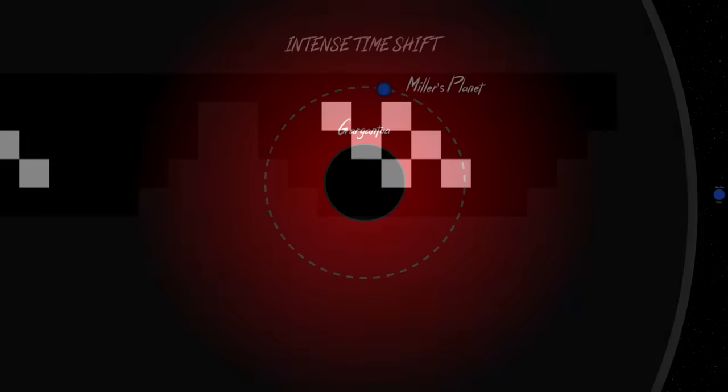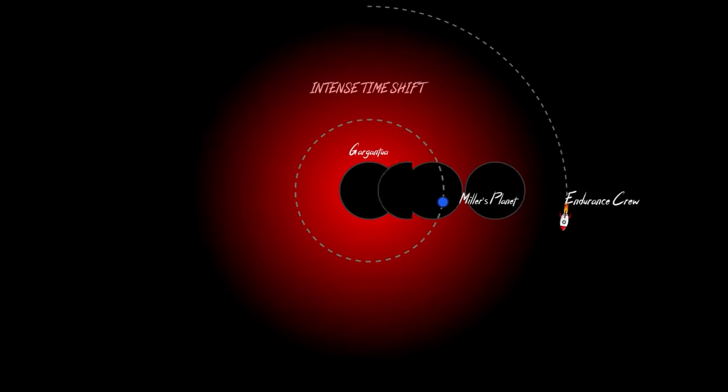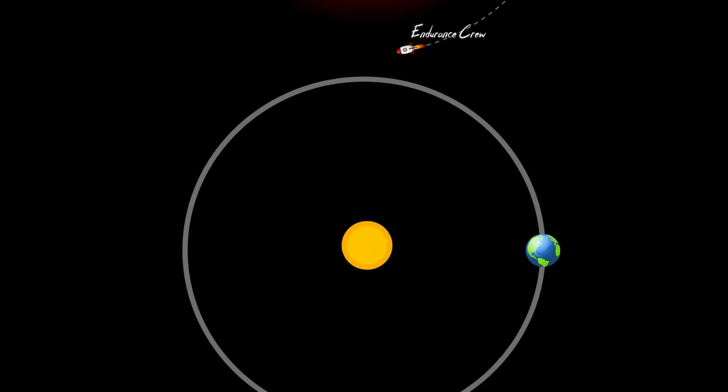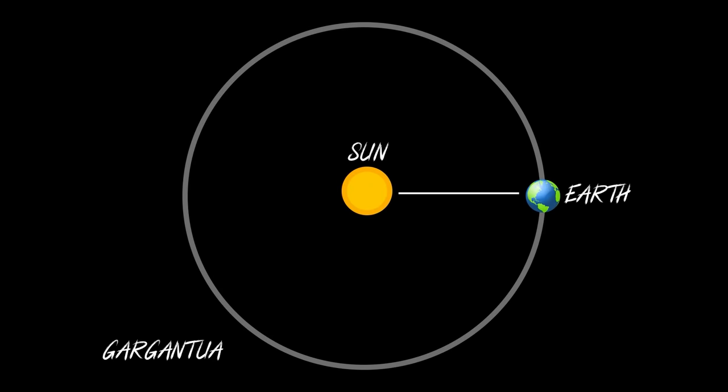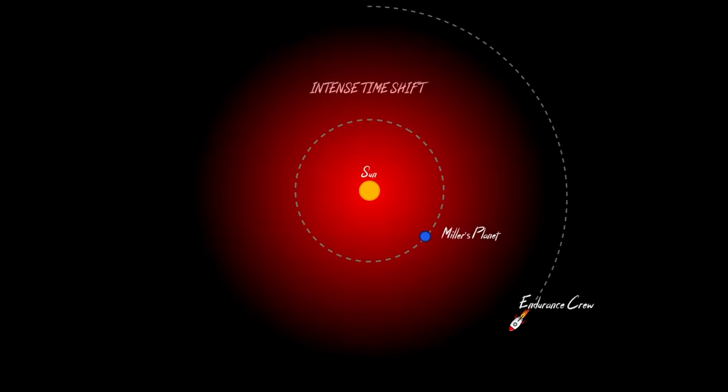So a reasonable orbit that would keep the Endurance out of Miller's intense time shift would be approximately five Gargantua radii away from Gargantua, with one radii being approximately the distance of 150 million kilometers, or about the distance from the Earth to the Sun. So with an orbit of five Gargantua radii, that means the distance is almost the same as our Sun all the way out to Jupiter's orbit.